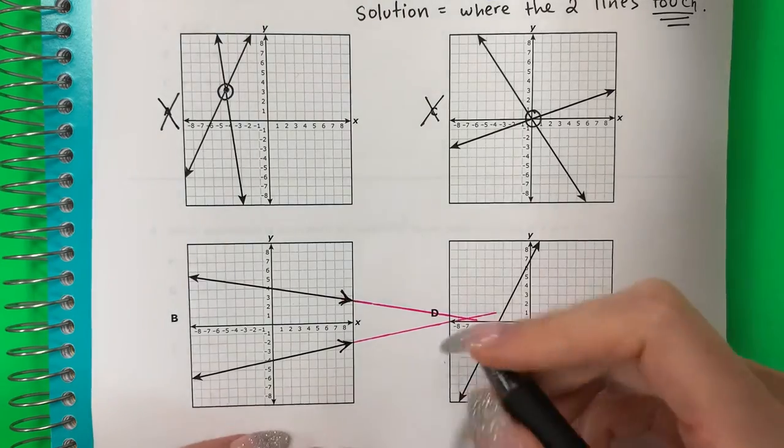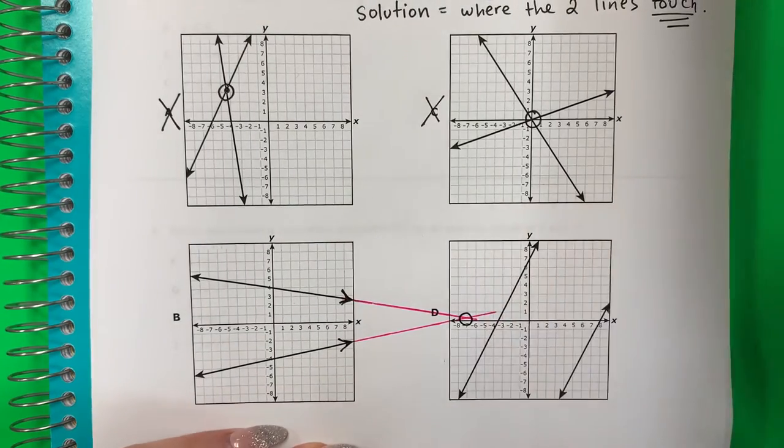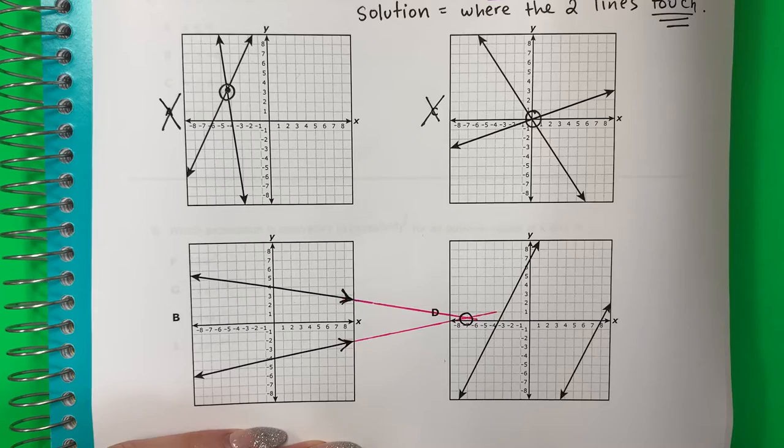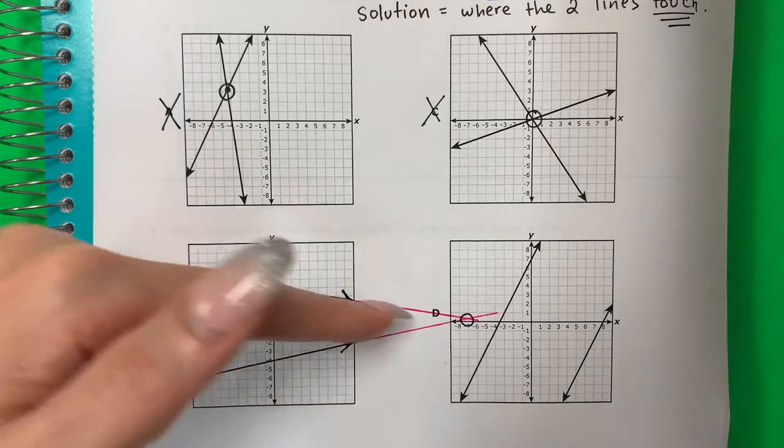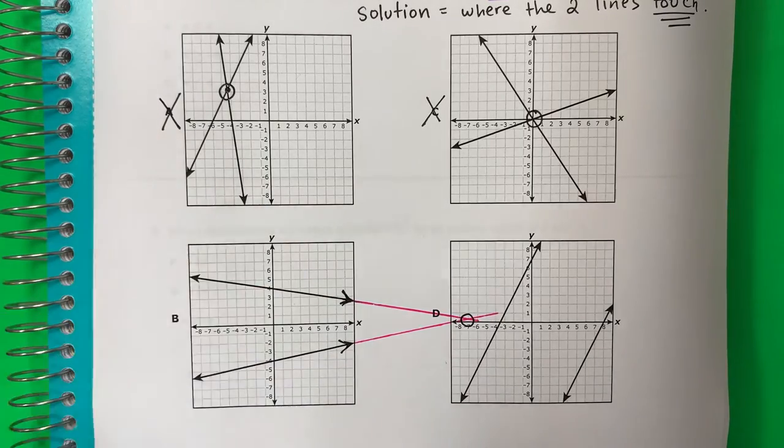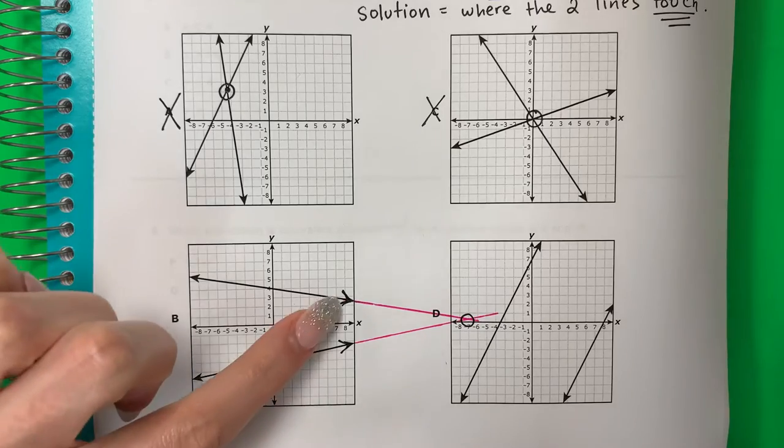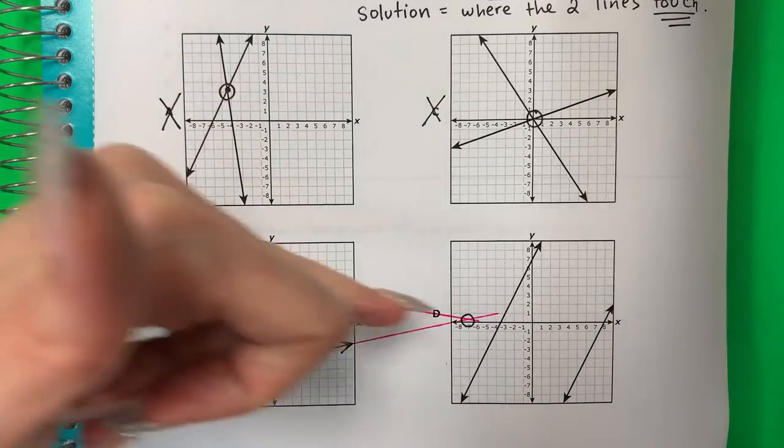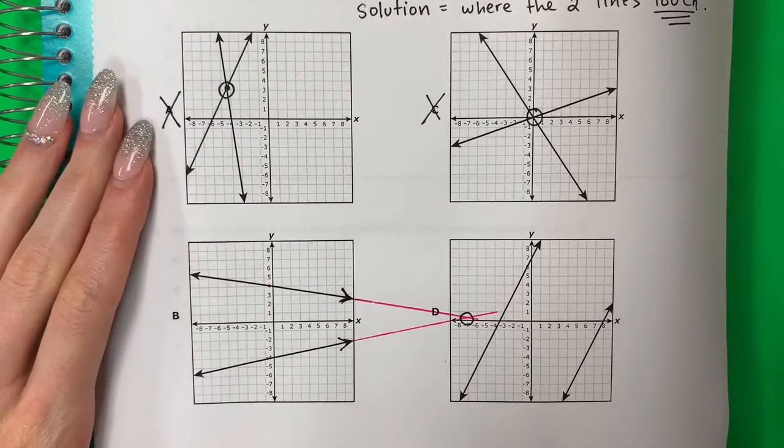Well, they are going to touch. Va a tocar. They do touch. Sí, se tocan. They touch. They will touch because the arrows mean that it continues forever. Se tocan porque las flechas significa que estas líneas se continúan para siempre.